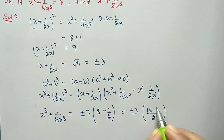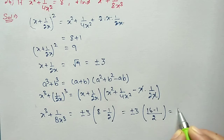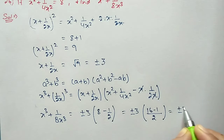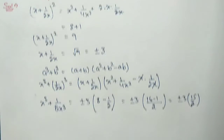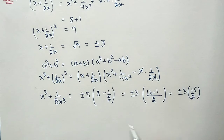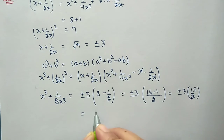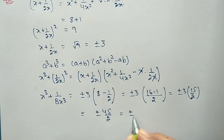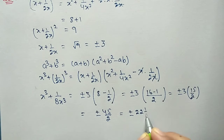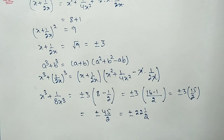Taking LCM of 2, we get (16 − 1)/2 = 15/2. Multiplying: ±3 × 15/2 gives ±45/2, which we can write as ±22 whole number 1/2.